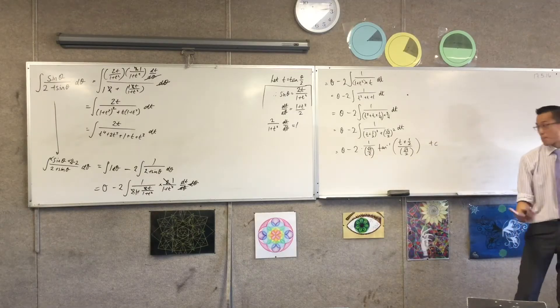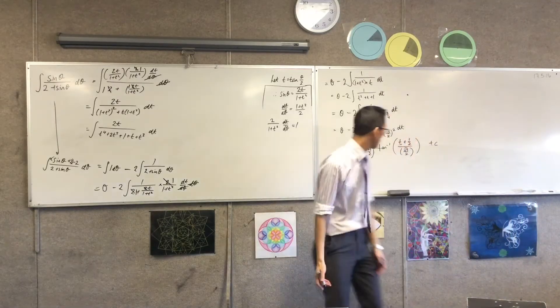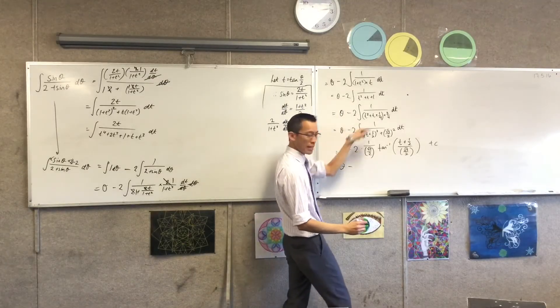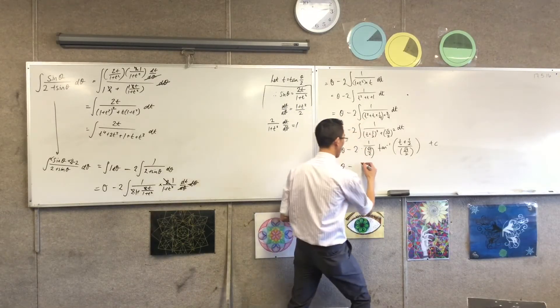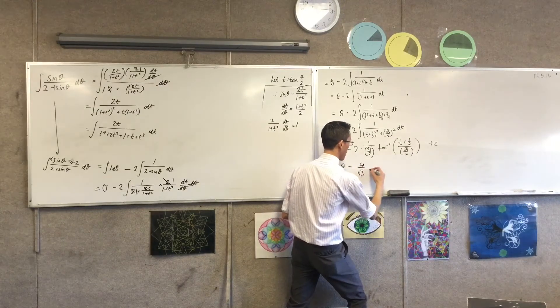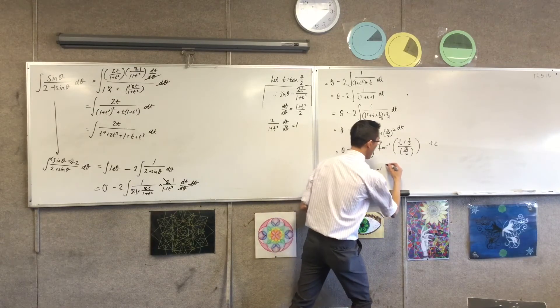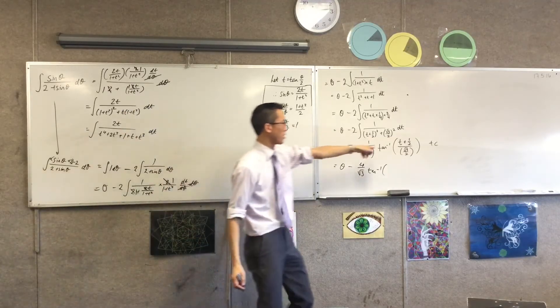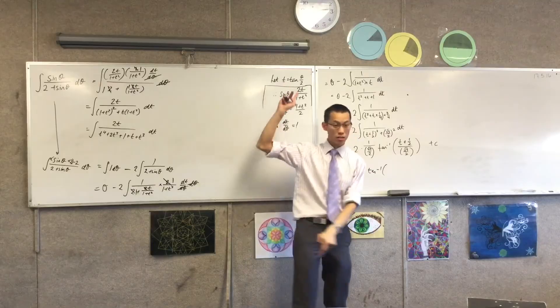You've got theta minus. That four is going to. That two is going to come into the numerator, become a four. Four on root three. Tan of. Okay, what's in here? I'm going to do two things. So firstly, I am going to replace the t with tan of theta on two, which is what I said.